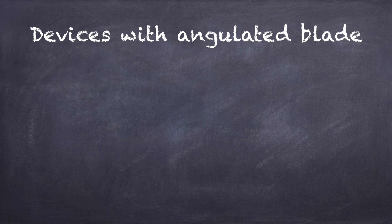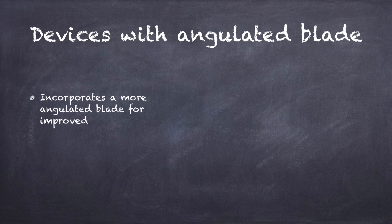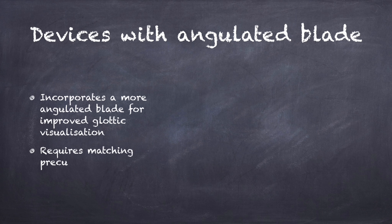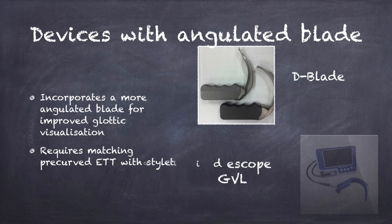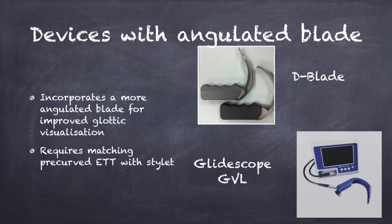Devices with angulated blades incorporate a more angulated curvature into the blade, which improves glottis visualization with minimal patient head flexion and extension. These require matching pre-curved stylets. Examples include GlideScope GVL, Cobalt or Ranger, GlideScope Microach series, and C-MAC with D-blade.